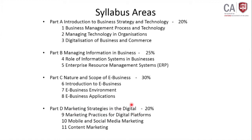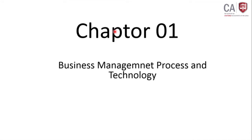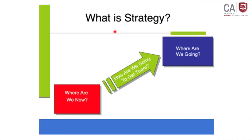Let us start with the first topic: business management process and technology. Here we are going to talk about what is strategy. It is a common word you may have encountered in your organization when working. Some students at CAC Lanka are still working in audit firms. There can be so many strategies.